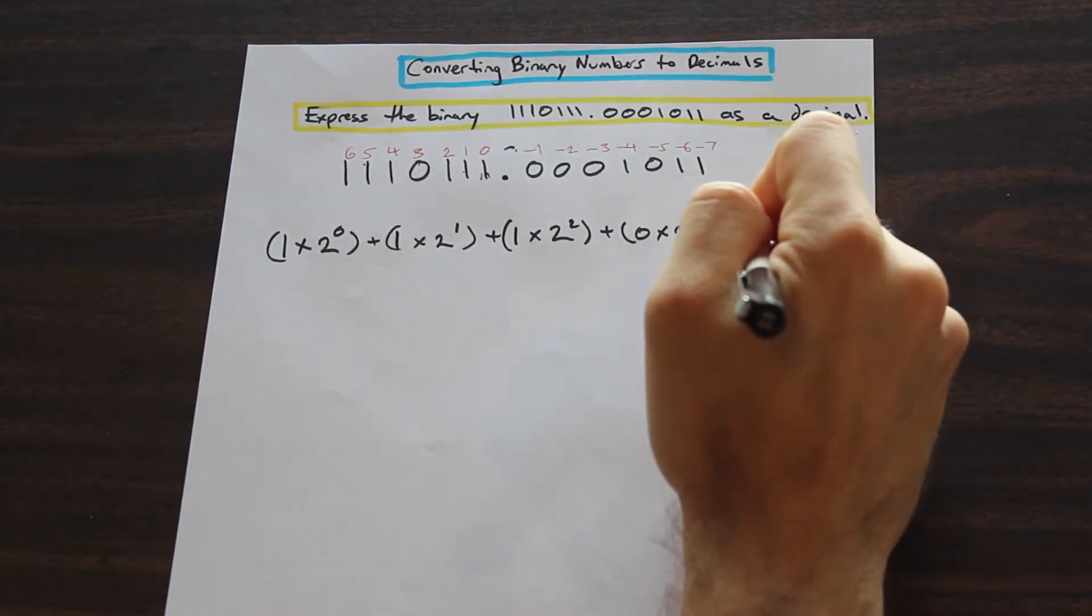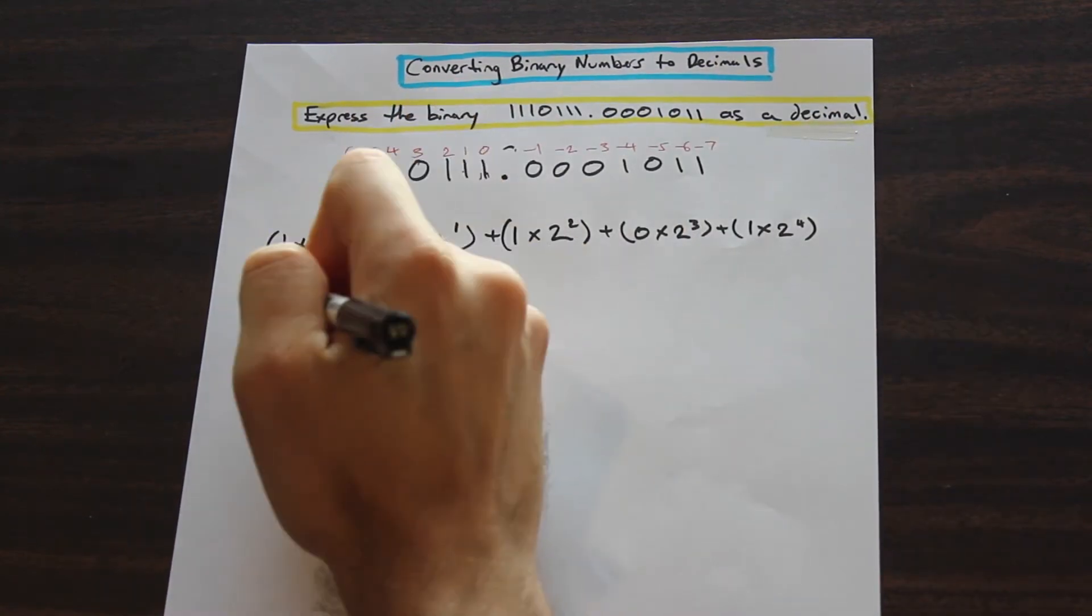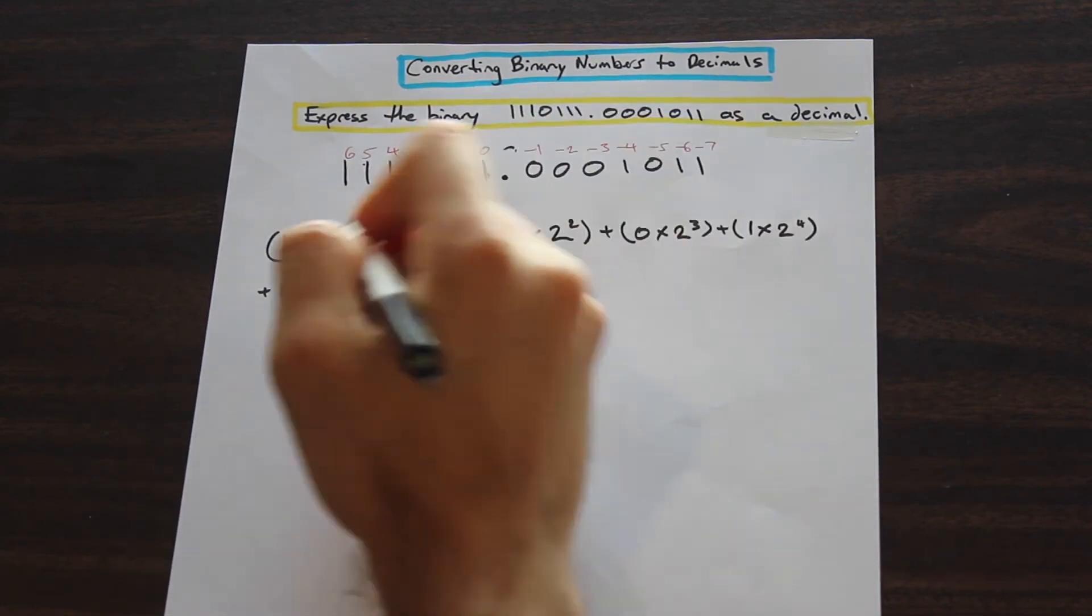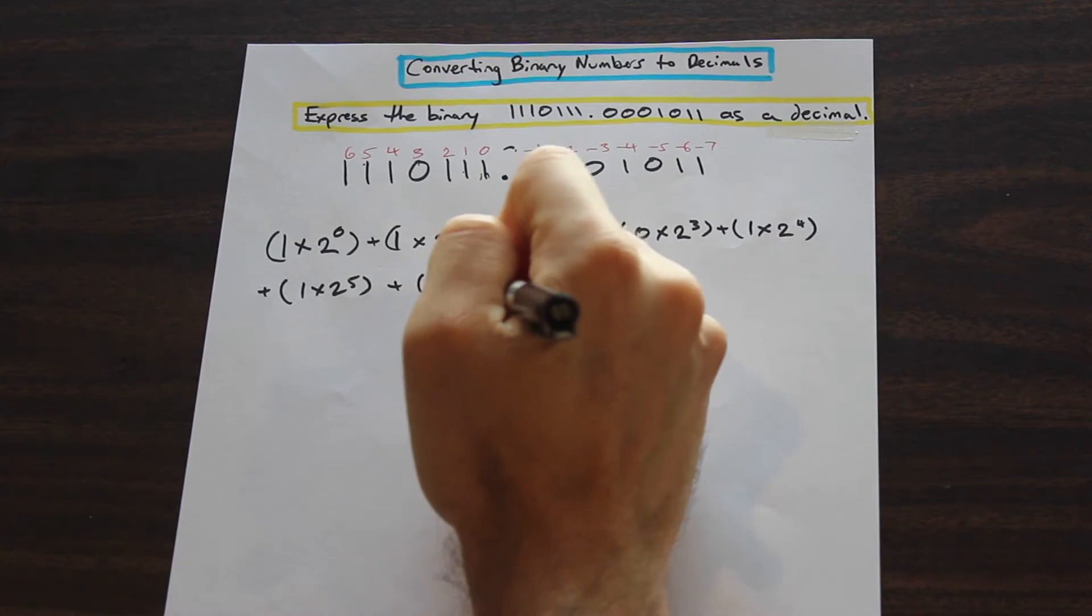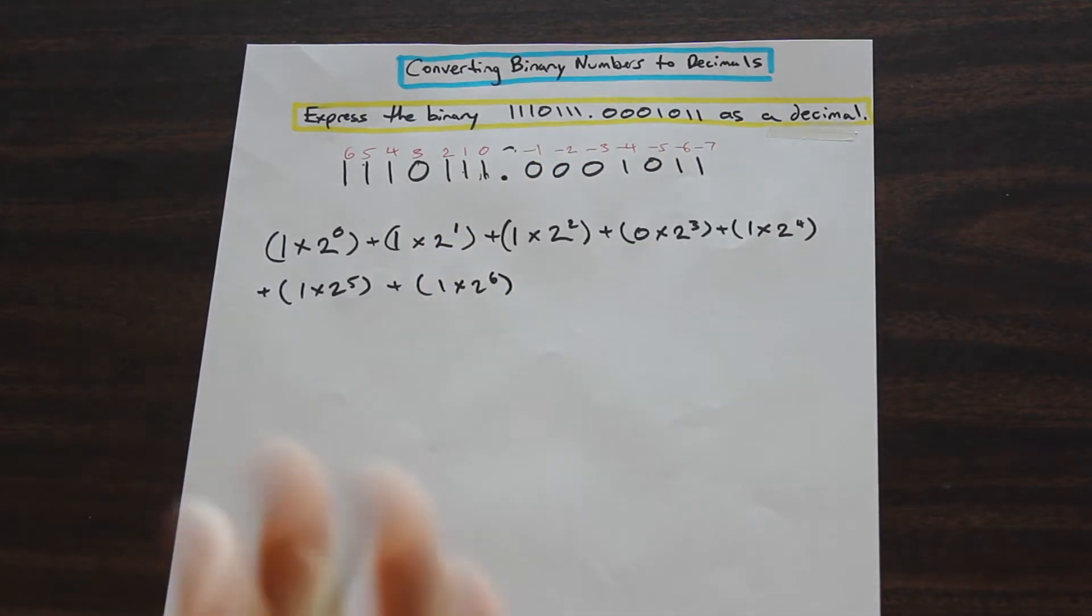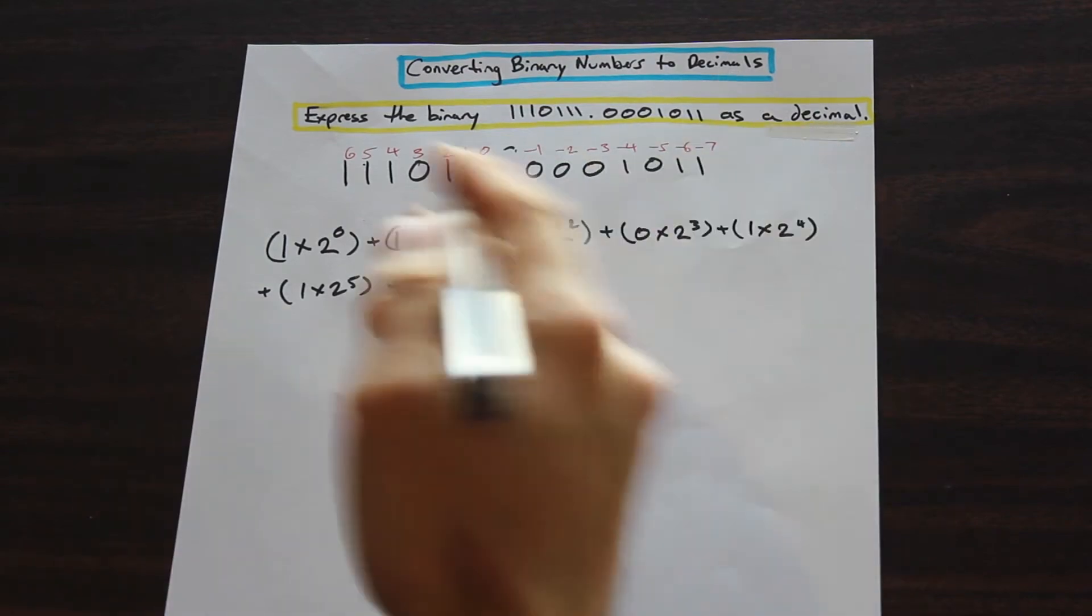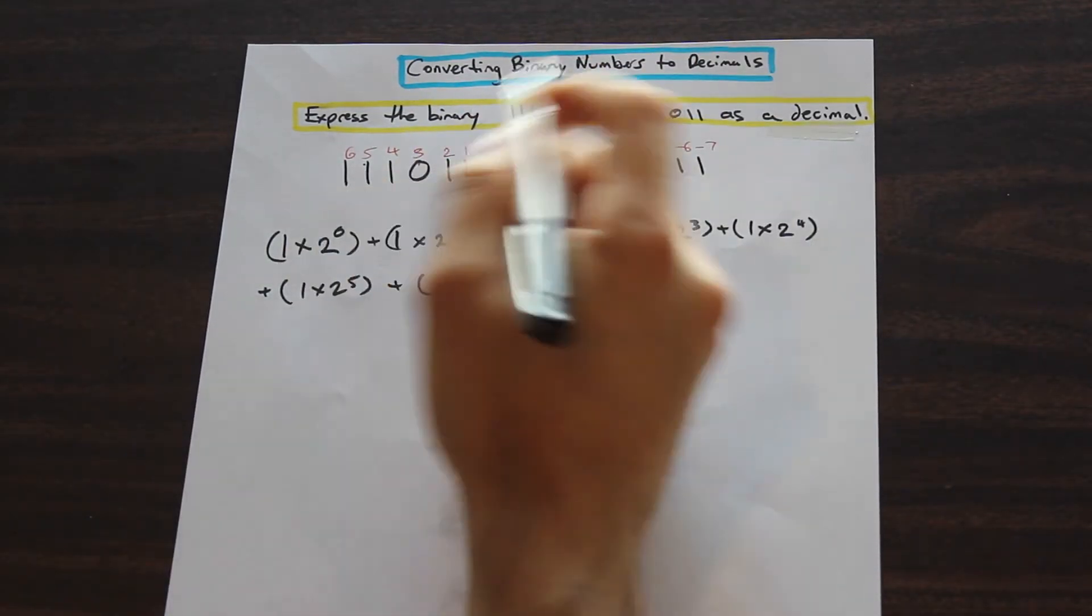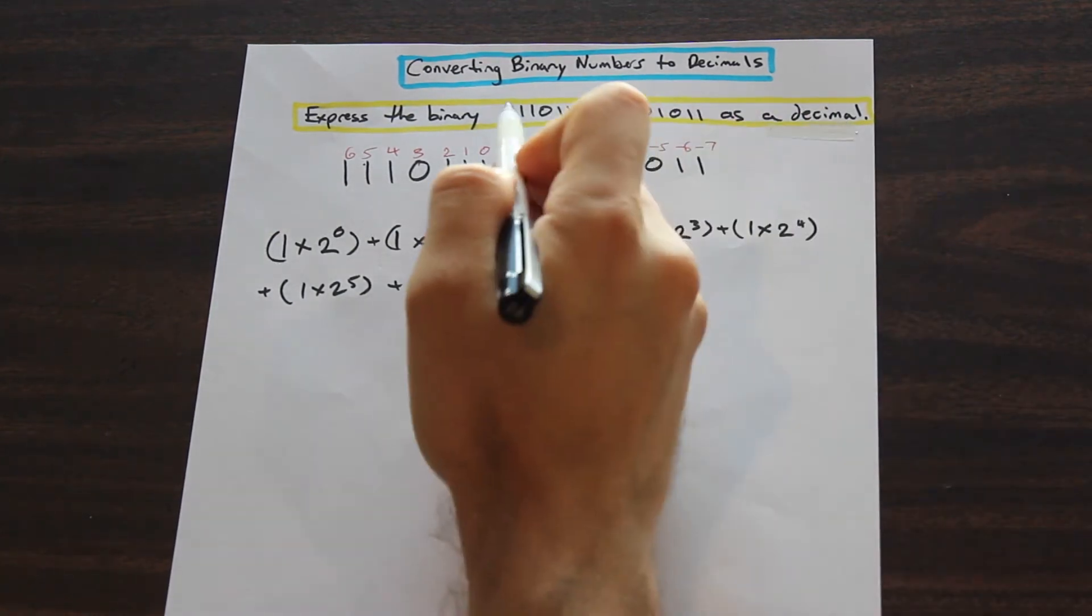Plus 0 times 2 to the power of 3, it doesn't matter because that's going to be 0. Plus moving along, 1 times 2 to the power of 4. Plus, and I'll just do the last ones quick because we know what we're doing now, 2 to the power of 5 plus 1 times 2 to the power of 6.